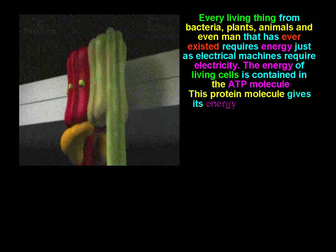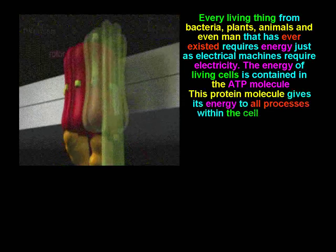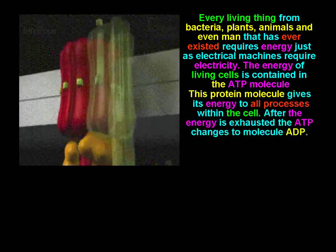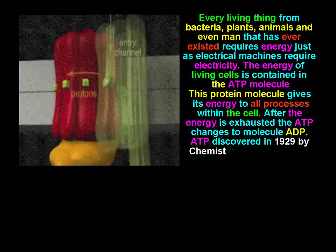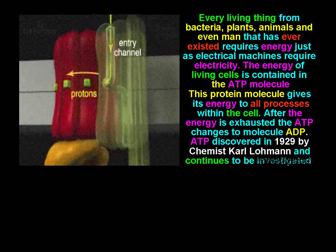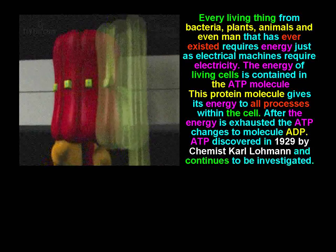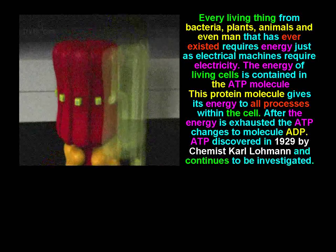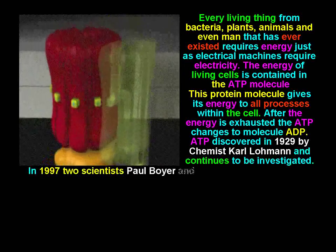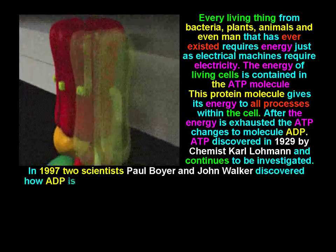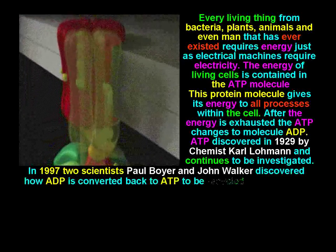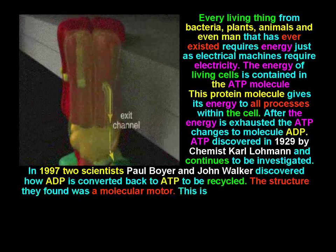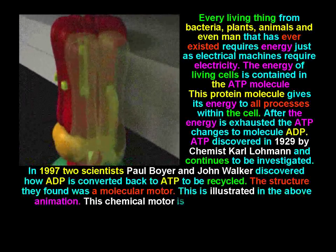This protein molecule gives its energy to all processes within the cell. After the energy is exhausted, the ATP changes to the molecule ADP. ATP was discovered in 1929 by chemist Carl Lohmann and continues to be investigated. In 1997, two scientists — Paul Boyer and John Walker — discovered how ADP is converted back to ATP to be recycled. The structure they found was a molecular motor.